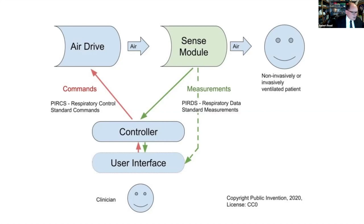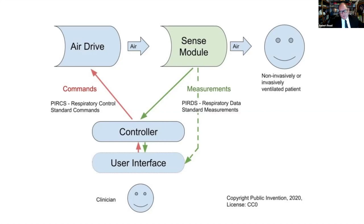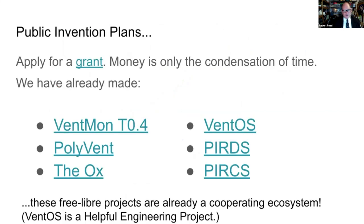You need something like the Ventmon to detect the lowering pressure which is caused when the patient attempts to initiate a breath. But if you have a sense module — as OpenVent Bristol has, for example — then you can support spontaneous breathing, which makes it far easier to deploy, especially in a low and middle income country. The controller is very similar to VentOS. We also have efforts underway to make a user interface.